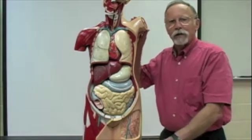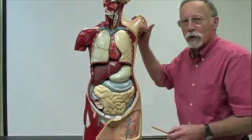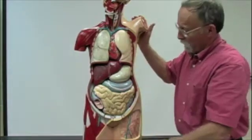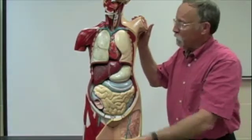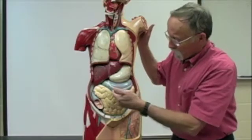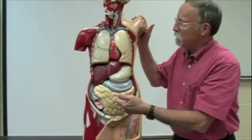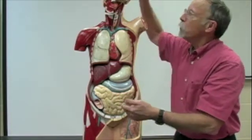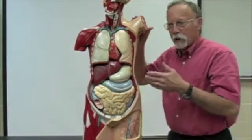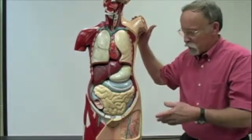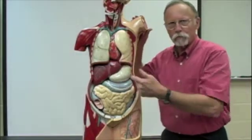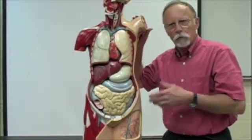Organisms are divided into organ systems. In the human, for example, the respiratory system, the digestive system, the nervous system, the endocrine system, the cardiovascular system, and so forth.